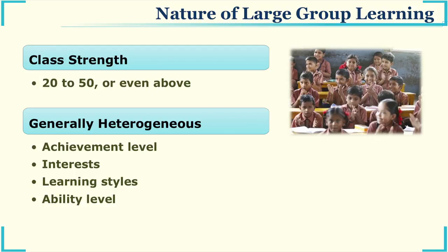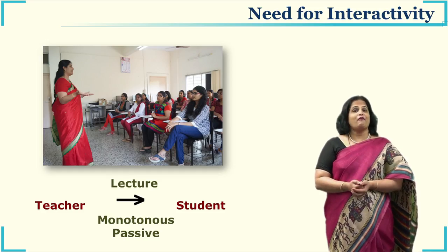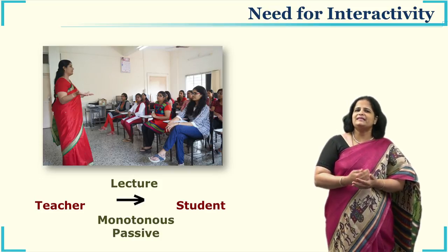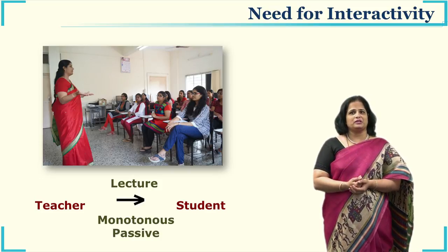Let us look at some characteristics of large classrooms. The strength of large classrooms could be anything between 20 to 50 or maybe even more. The second characteristic is their heterogeneous nature — we find heterogeneity in terms of students' ability, their interests, their learning styles, their background knowledge, and their socio-economic background.